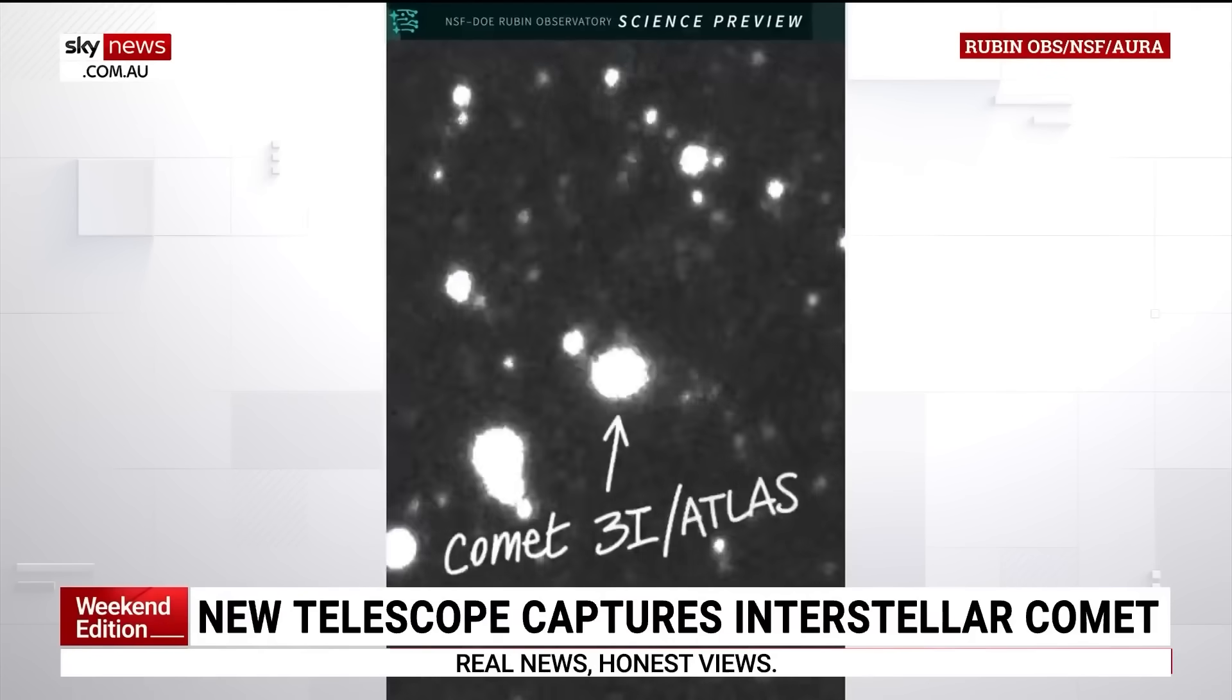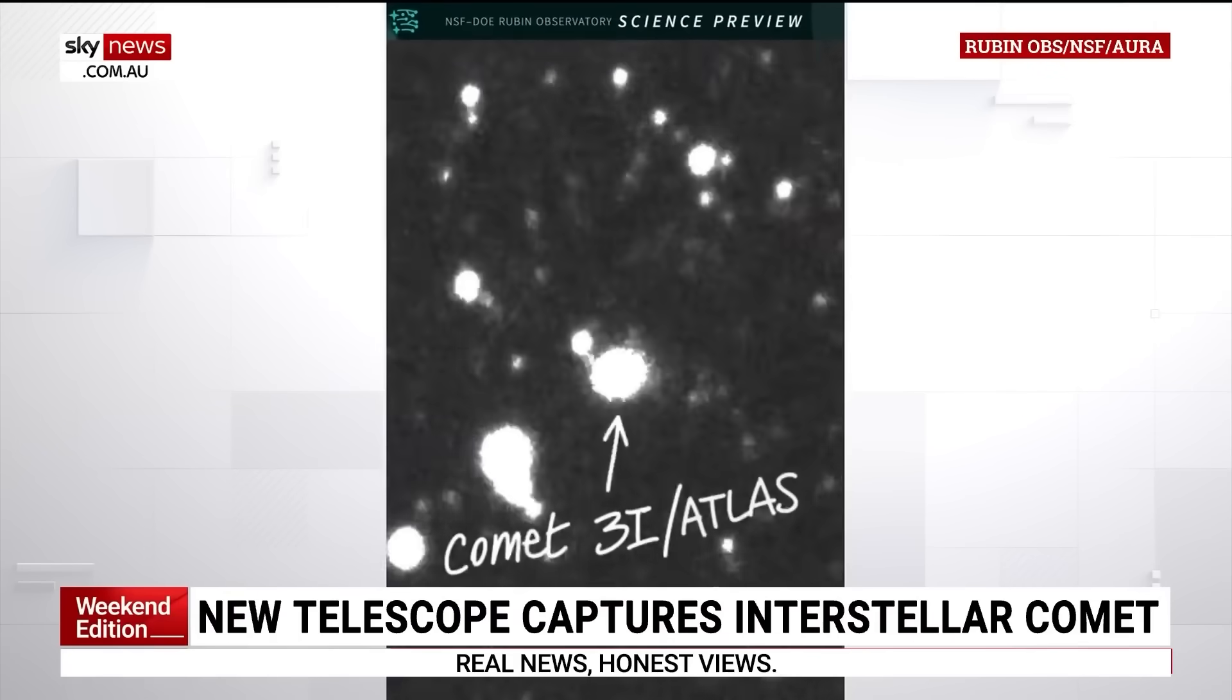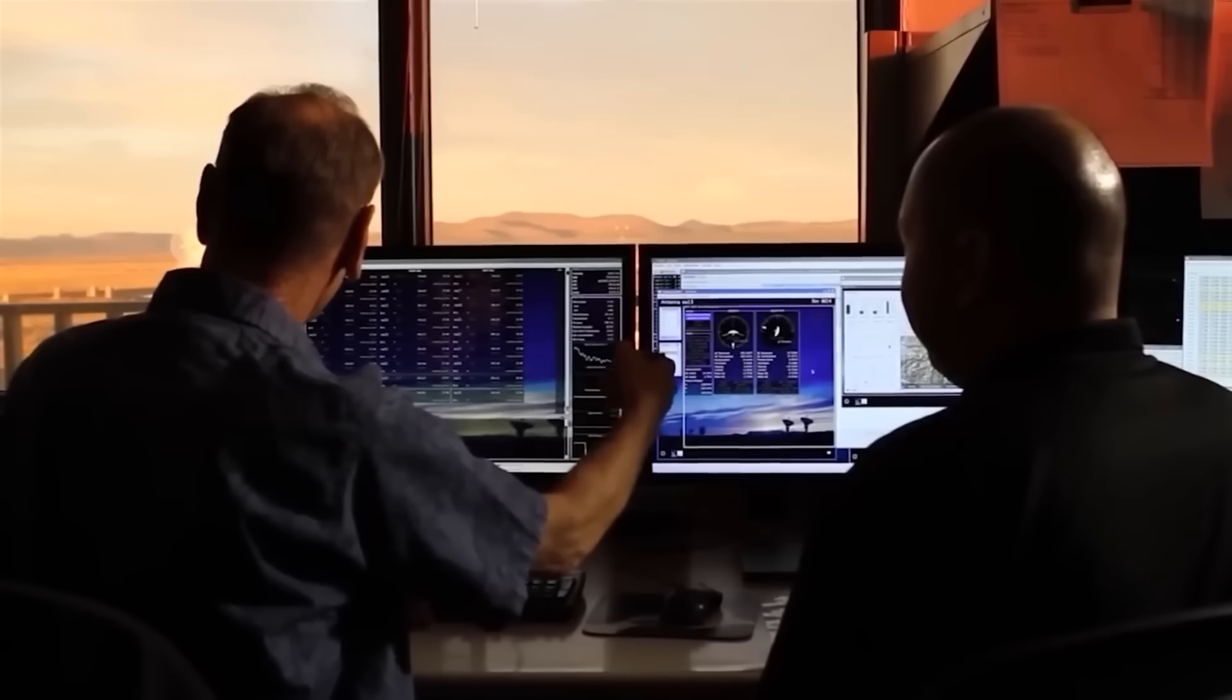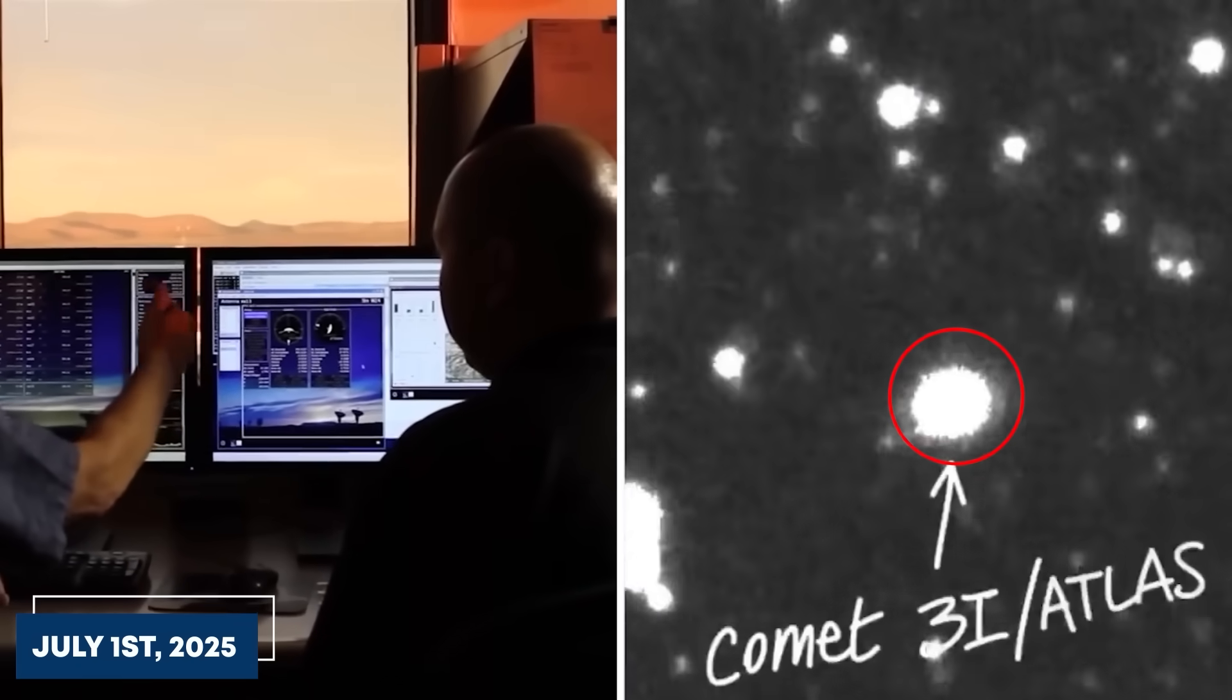A new telescope built to track fast-moving space objects in Chile has caught a comet from beyond the solar system moving across the sky. Something extraordinary happened on July 1st, 2025.